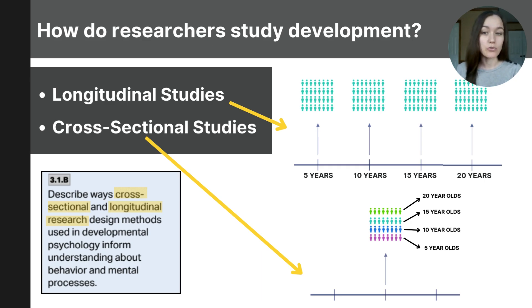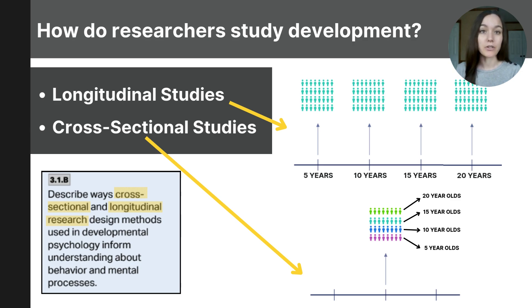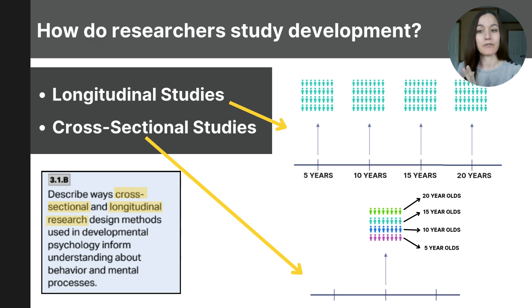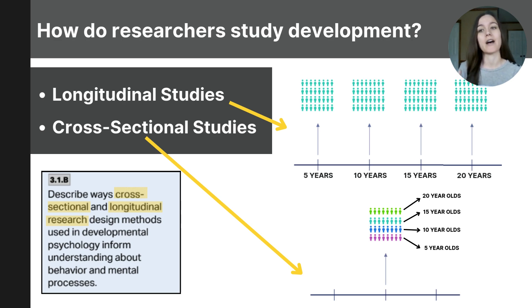The advantage of the longitudinal method is that researchers are following that same group of people, so there are fewer variables at play and you can see how those specific people change over time. However, longitudinal studies take a long time to complete. In this example, if you started studying children at age five and followed up every five years until age 20, researchers would need to dedicate 15 years to this study, which is not only a long time but also very expensive. You also run the risk of participants dropping out or being unable to complete the study.